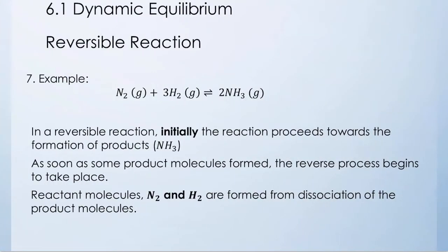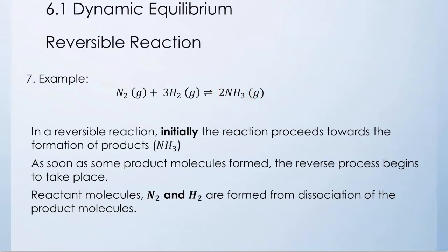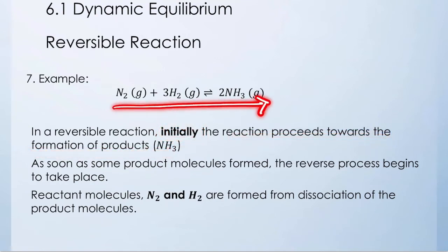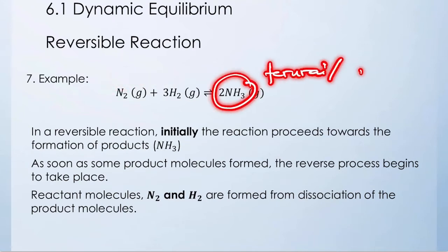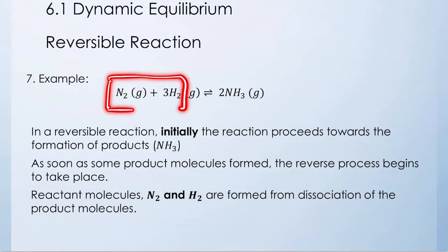Let's look at example number 7 — this is actually the Haber process. In a reversible reaction, initially the reaction will proceed towards the formation of products, meaning it is the forward reaction from left to right, producing NH3. And as soon as some of the product molecules are formed, the reverse process begins to take place. NH3 will dissociate to form nitrogen gas and hydrogen gas again. This is what we call a reversible reaction.